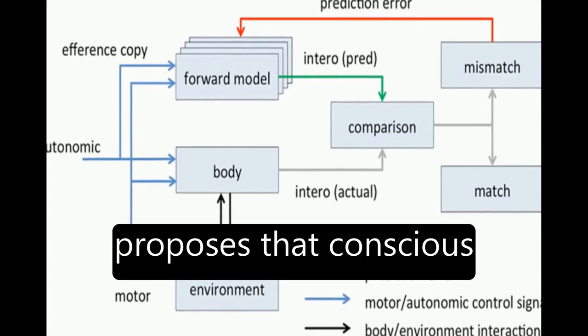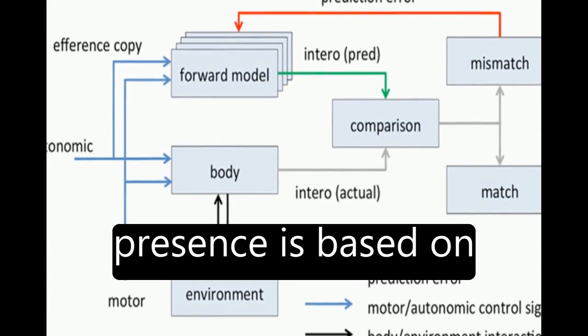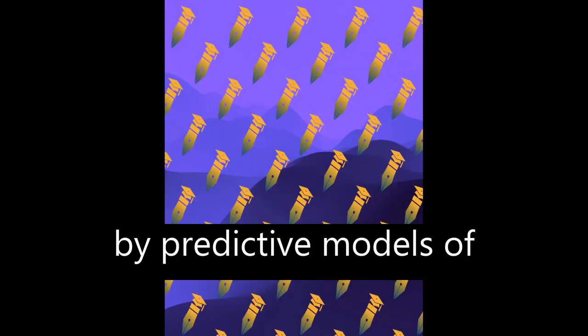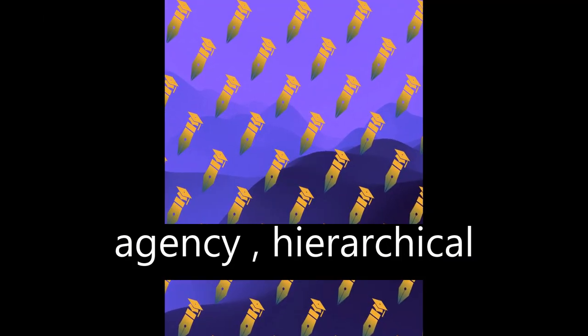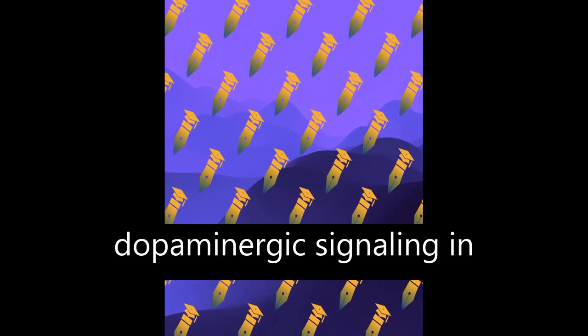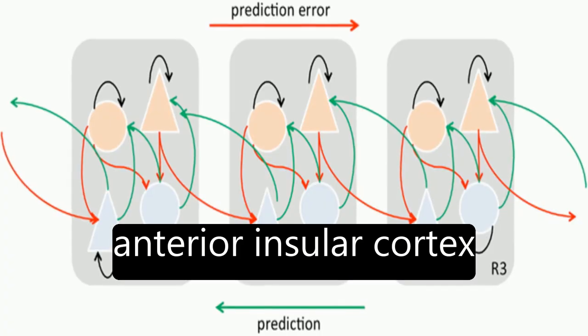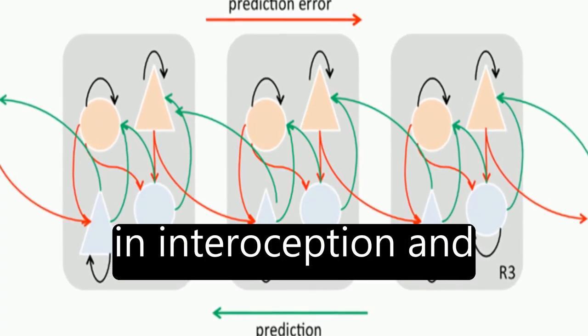The theoretical model proposes that conscious presence is based on interoceptive prediction error and is influenced by predictive models of agency, hierarchical predictive coding, dopaminergic signaling in cortex, and the role of the anterior insular cortex in interoception and emotion.